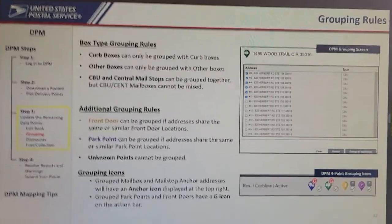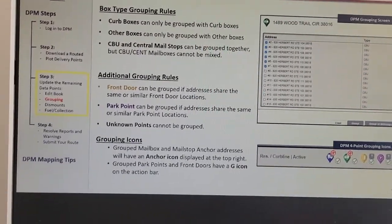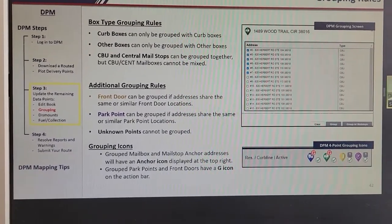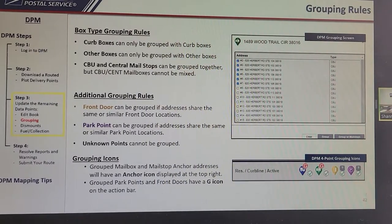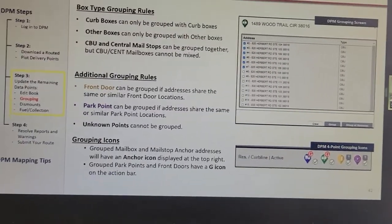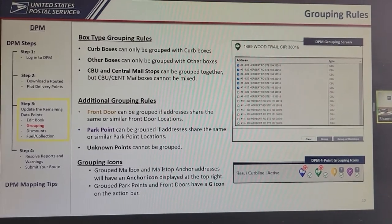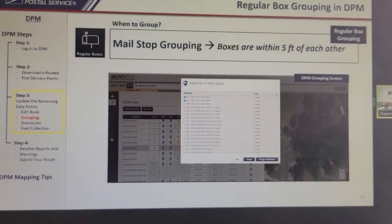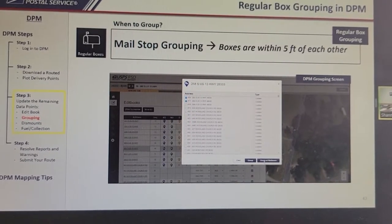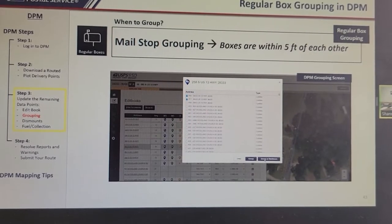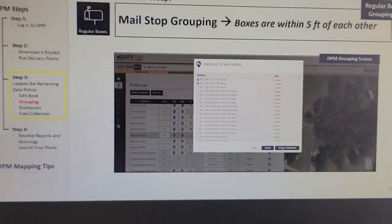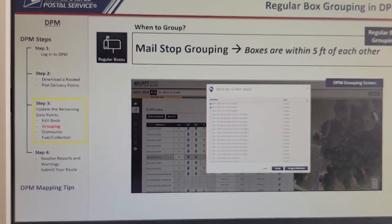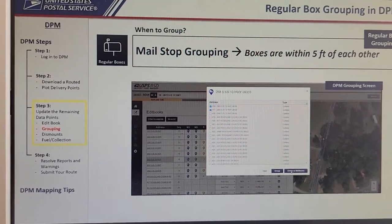Front doors and park points can be grouped together if they share the same or similar address. For example, if a courier delivers to an office building with 10 suites — 10 addresses — there would be only one park point for all 10 addresses since you park in the same location. If packages are all left at the reception rather than individual addresses, that is a situation where you would group as well.